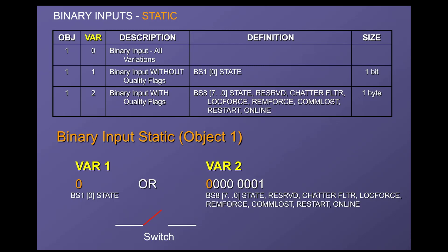When we look at how binary input data works, first we look at something called the static data type. In DNP3, static data refers to real-time data. Anytime we see 'static,' that's the name DNP3 gives to real-time data. Looking at static data points in object group 1 — all the static data types are in object group 1. Variation 0 is for master requests only. Variation 1 of object 1 is simply a status, a single bit, a 0 or 1 — just like in Modbus. That's all that's required: a single bit, either 0 or 1.